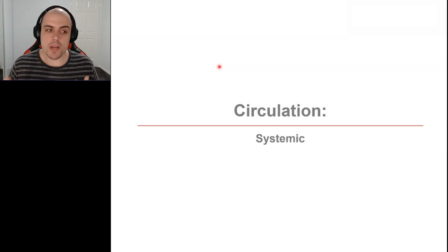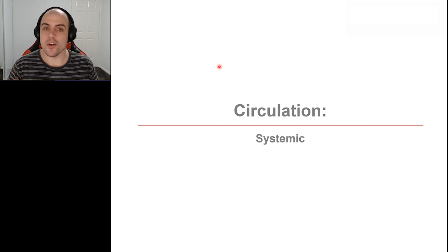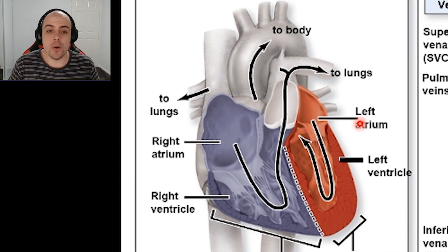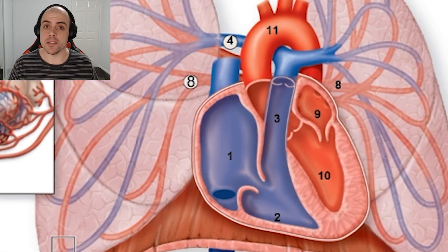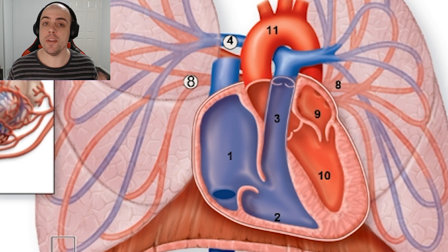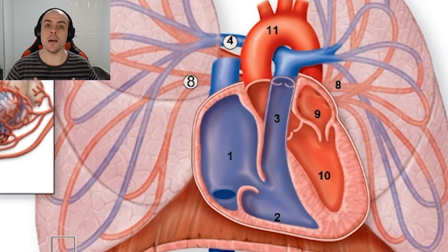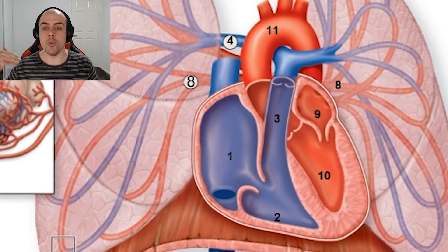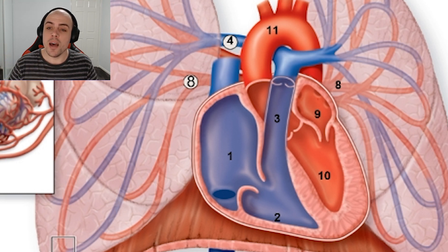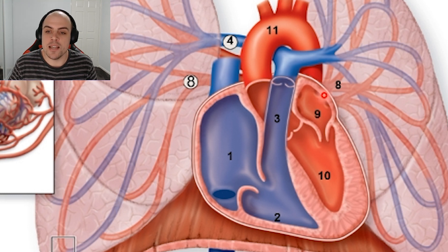Now that we have covered the pulmonary circulation, let us cover the other side of the coin — the systemic circulation. We are focusing on the left hand side of the heart. In the previous video we looked at blood moving to the right and left lung and becoming oxygenated. From there, the blood moves back to the heart and into our left atria.